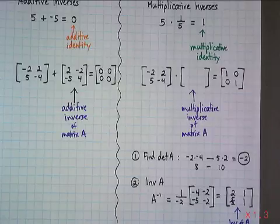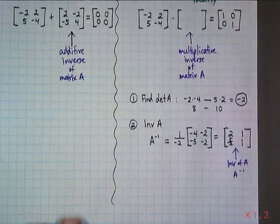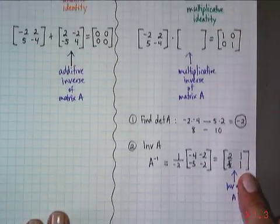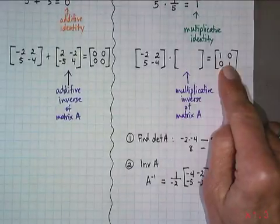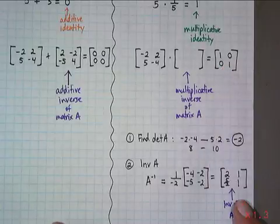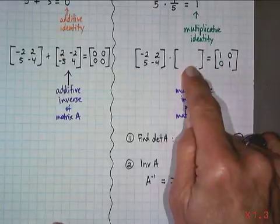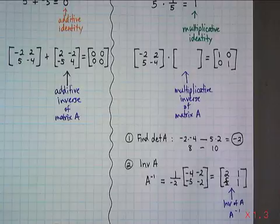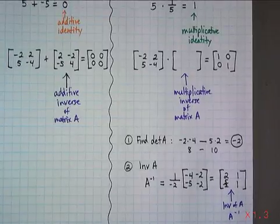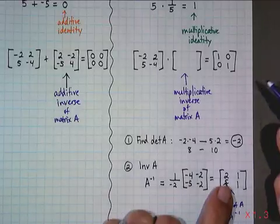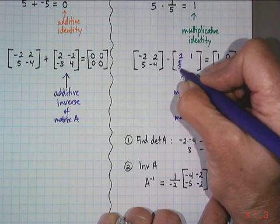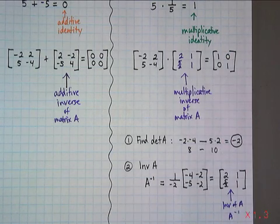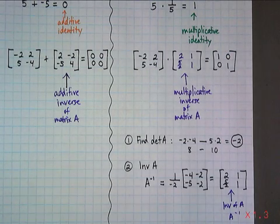Now you want to try to check your work. How would you know if you really did it right? You would take this matrix, put it right here, and see if you get the identity matrix. So if I put 2, 1, 5 halves, 1 in this spot, would I get the identity matrix? I'm going to insert those values and practice my matrix multiplication to show you.